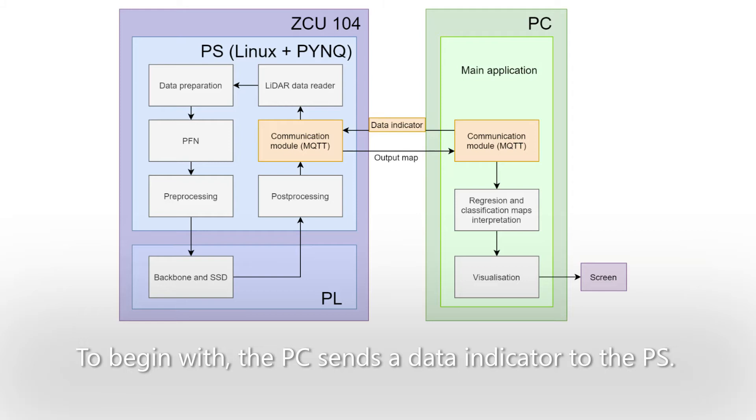To begin with, the PC sends a data indicator to the PS. It points to which point cloud the target platform should read from the memory.